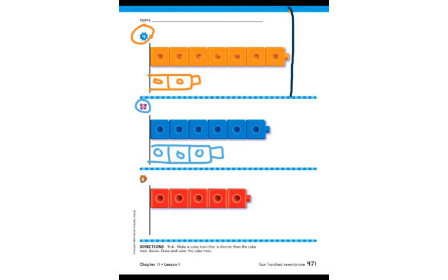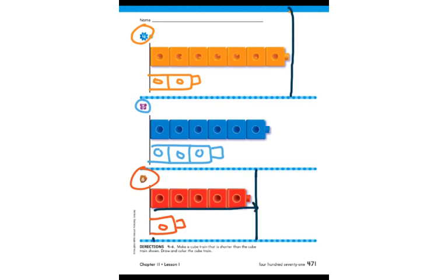The next one at the bottom, number six, we have a red cube train. Again, we are making a cube train that is shorter. I'm going to draw just one cube in my cube train — that makes it shorter than the top. If we draw the black line, the train at the top goes all the way to the black line, but this one stops short right here. So the bottom one is shorter than the top one.